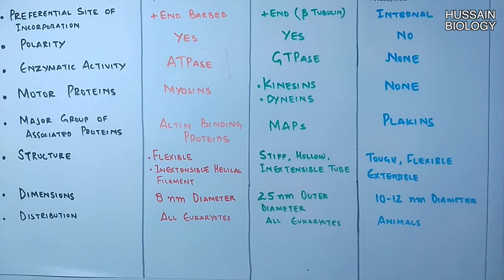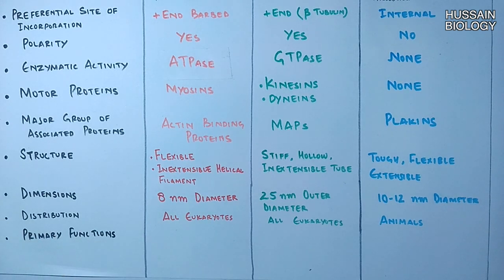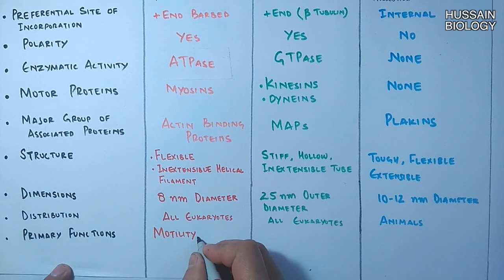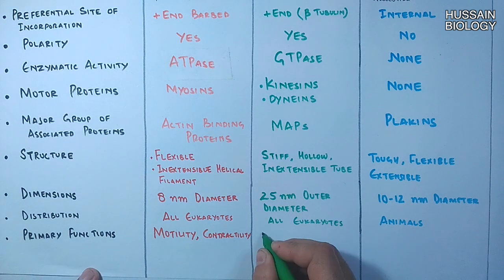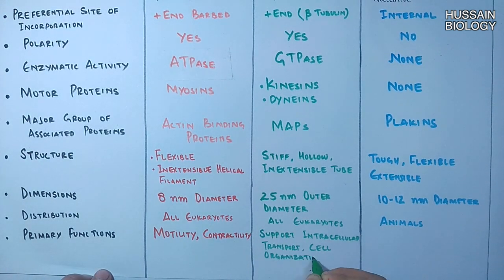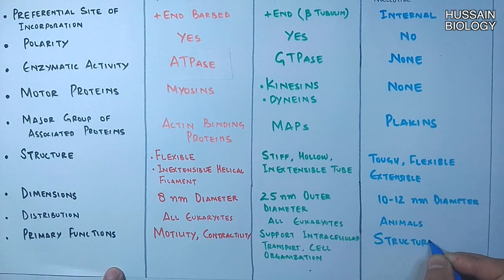An important difference lies in their functions. Microfilaments take part in motility and contractility, such as muscle contractions through actin-myosin interaction. Microtubules support intracellular transport and cell organization, whereas intermediate filaments provide structural support.